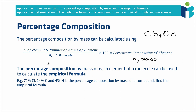If we know the percentage composition by mass of each element in a molecule, we can find the empirical formula. For example, if a molecule has 72% by mass chlorine, 24% carbon, and 4% hydrogen, to calculate the empirical formula you take each percentage and divide it by the relative atomic mass of the corresponding element.